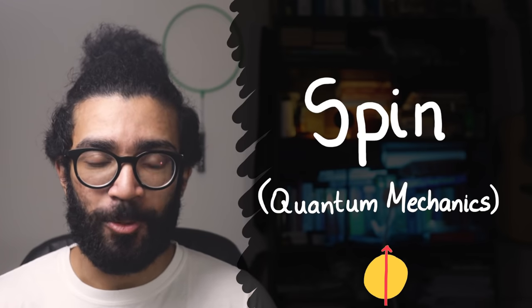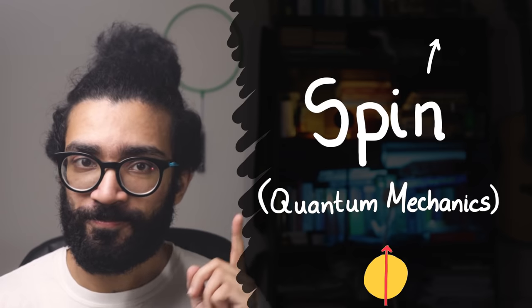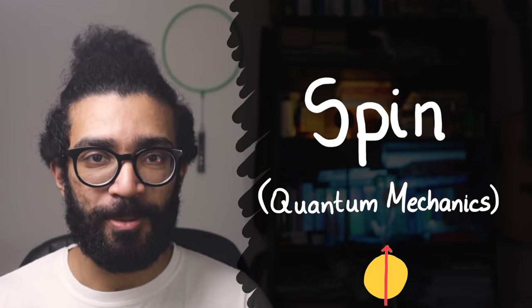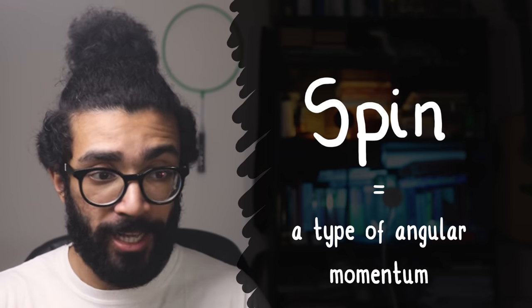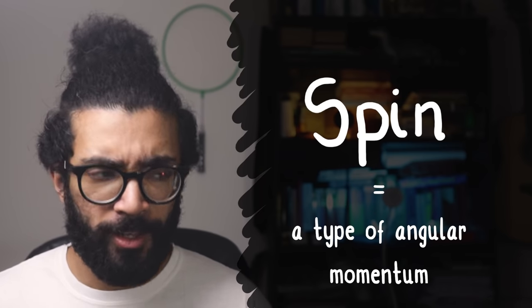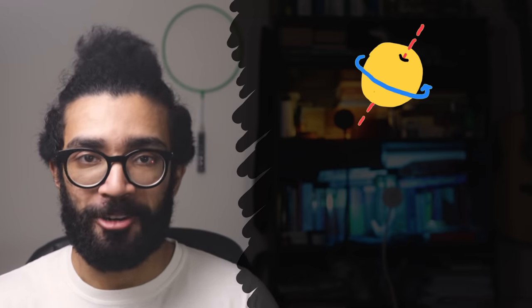Now spin is often discussed in quantum mechanics, usually as a property that electrons seem to have. But what exactly is spin? Well one of the key things that we need to understand about spin is that it's a type of angular momentum. Some of you might already be familiar with angular momentum. Objects that are spinning or rotating or orbiting another object, essentially objects that have angular motion, have angular momentum.